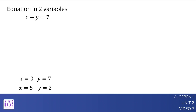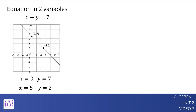We can represent all the solutions to x plus y equals 7 by graphing the equation on a coordinate plane. The graph is a line, and all the points on the line are solutions to x plus y equals 7.